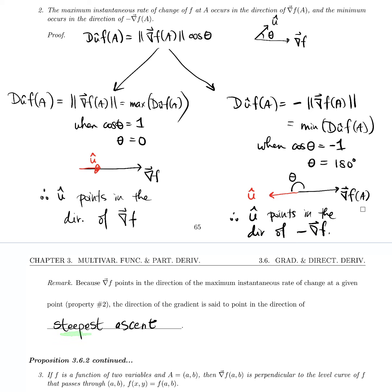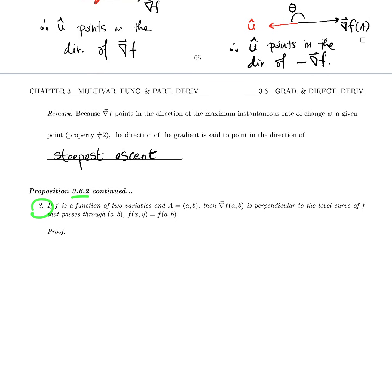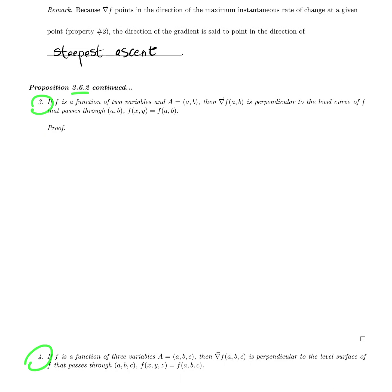It is steepest because it is the maximum, and ascent because the function is growing — the maximum instantaneous rate of change, the norm of the gradient, is a positive value, so the function is growing at that point at its maximum possible rate of change. So the gradient is the direction of steepest ascent at any given point. In the next video, we'll continue Proposition 3.6.2 with property 3 and property 4.